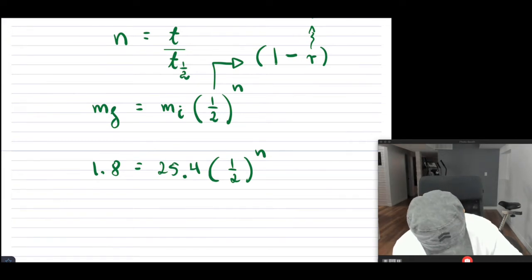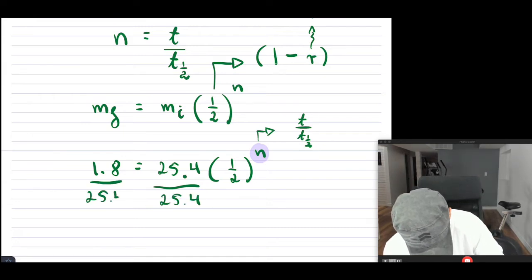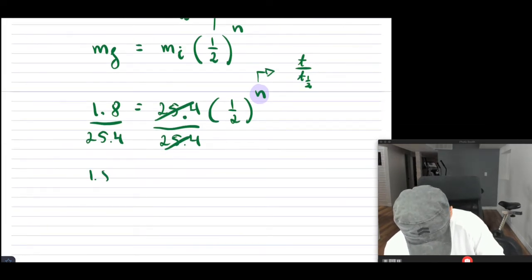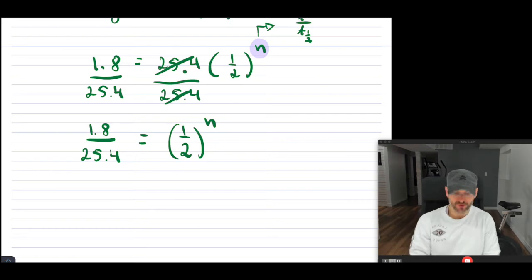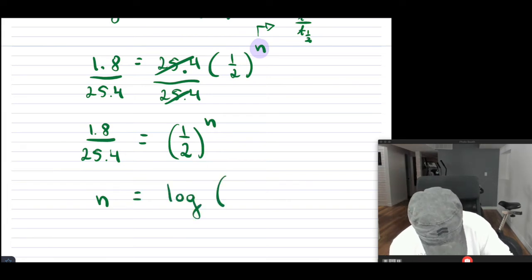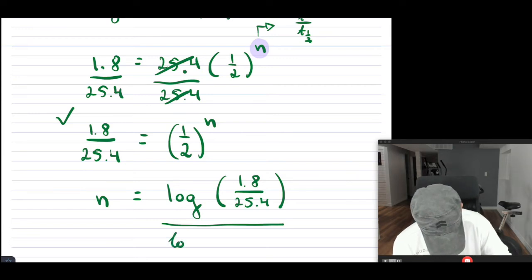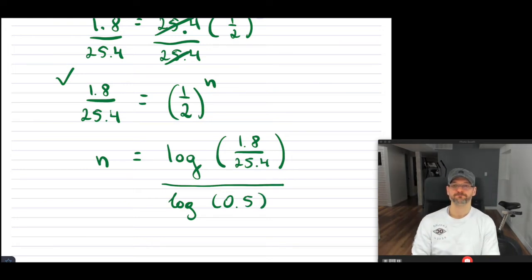So that N right there basically is equal to T over T one-half. So I'm going to solve it like this. First, let's divide both sides. That's going to get rid of this. And I'm going to get 1.8 over 25.4 equals to one-half to the N. Now, in order to solve for N, so how many half-life periods I went through, I can use log. So this is going to be N equals log of 1.8 divided by 25.4, divided by log of 0.5.